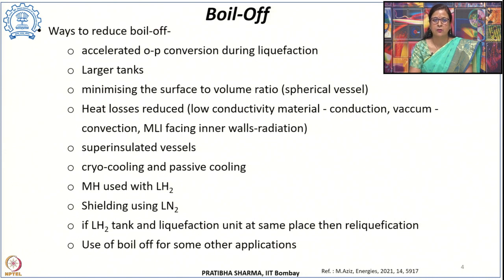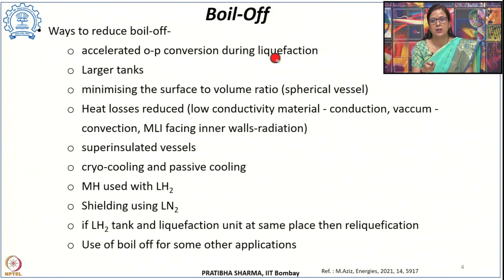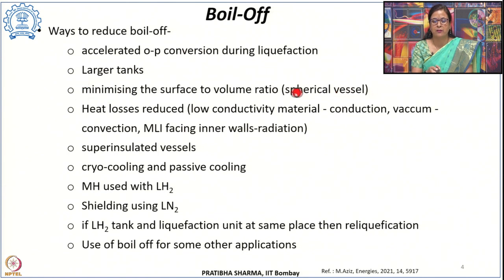To reduce boil-off, during liquefaction we have to convert hydrogen to para hydrogen. The equilibrium composition should be 99.8% para hydrogen at the liquefaction temperature, achieved via accelerated ortho-to-para conversion using various oxide catalyst. Another approach is to use larger tanks, because a smaller surface-to-volume ratio results in lower heat inflow. Spherical vessels minimize the surface-to-volume ratio and reduce boil-off losses.